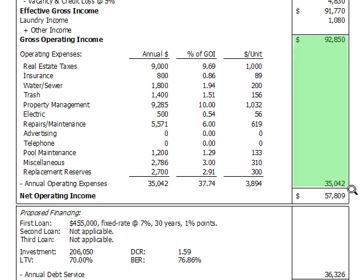You would then subtract that total from the gross operating income to show the net operating income. This is very important because net operating income represents the amount of money remaining to service the debt.